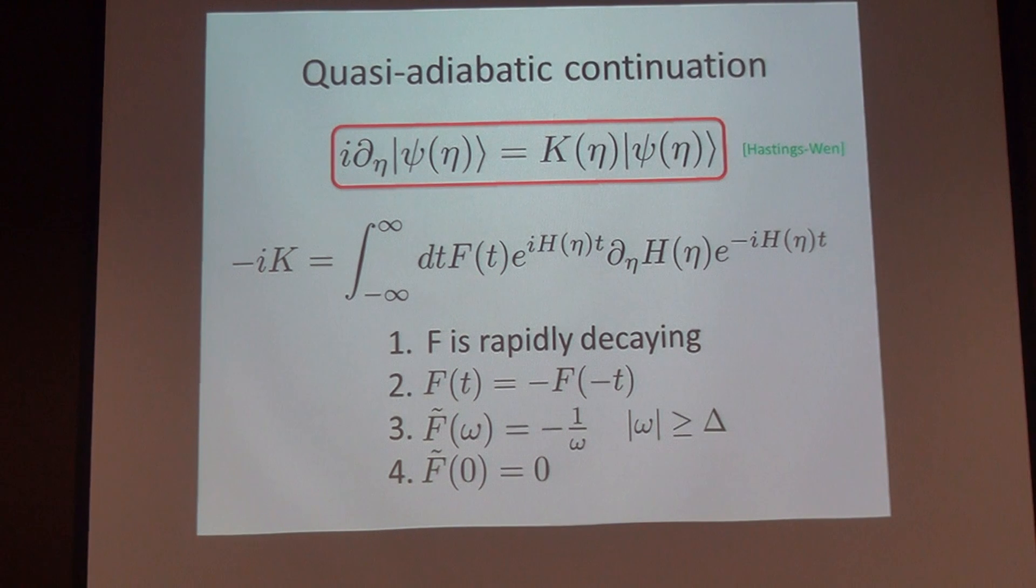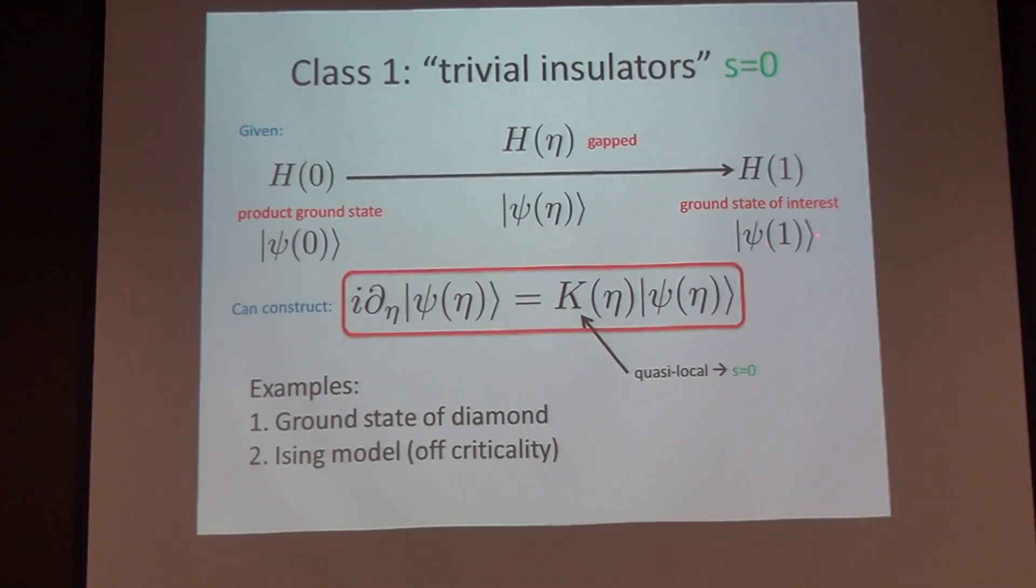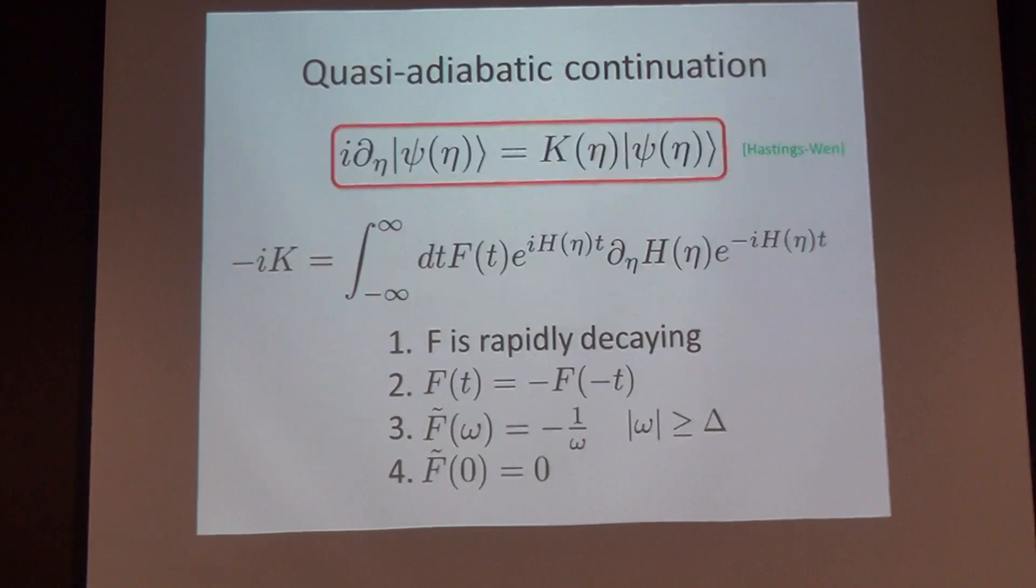This is why we actually need quasi-local, because this F doesn't decay exponentially, it decays only faster than any power. So that's it—I showed you there's a quasi-local Hamiltonian or generator. I just integrate this time evolution from zero to one, that produces a quasi-local Hamiltonian which is exactly what I needed to relate this ground state to this ground state. Indeed, any such system where the Hamiltonian is gapped and there's a path to a product state in time of order one is s equal to zero, which is of course what we all know.